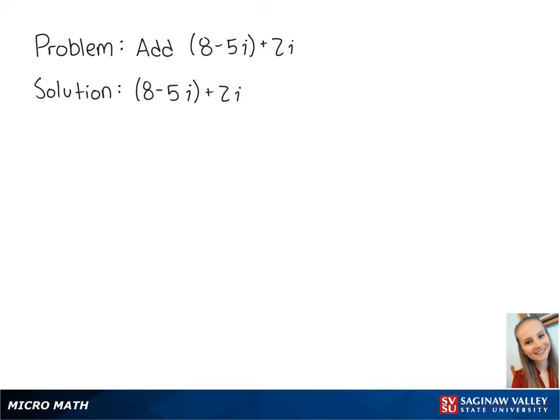Let's add the complex numbers 8 minus 5i plus 2i. 2i is equal to the complex number 0 plus 2i.